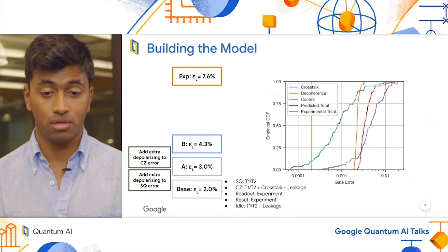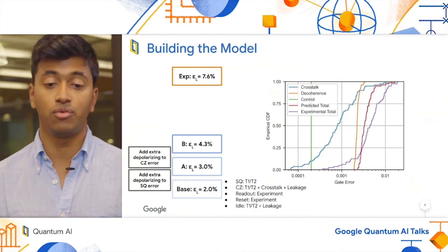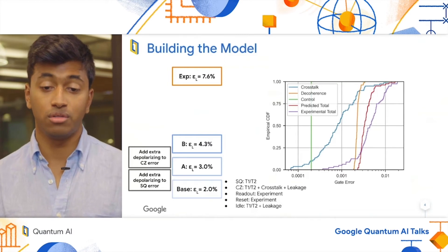In blue, we have the crosstalk. In orange, the decoherence. And in green, the control error. This leads to a predicted total that's shown in red.